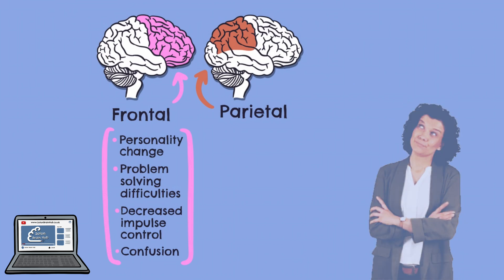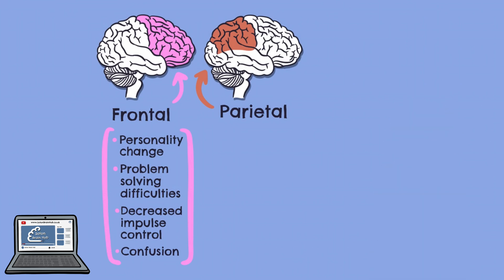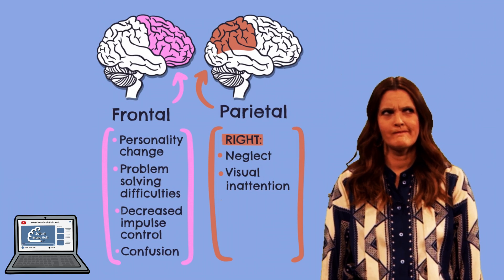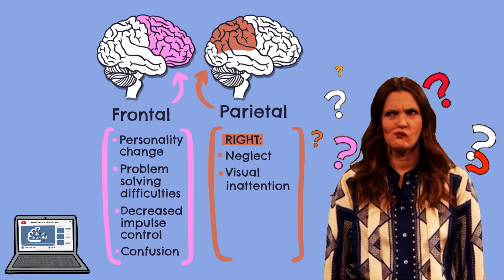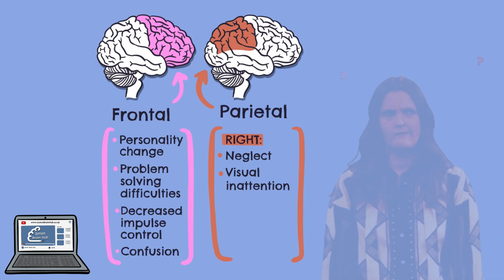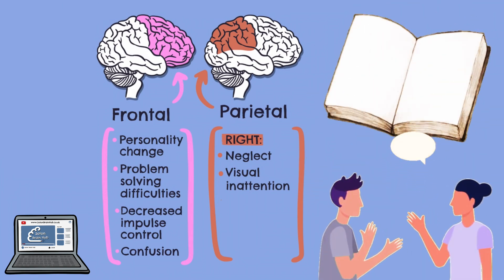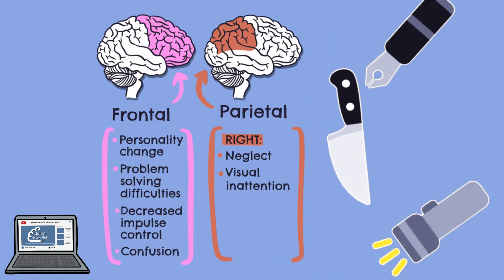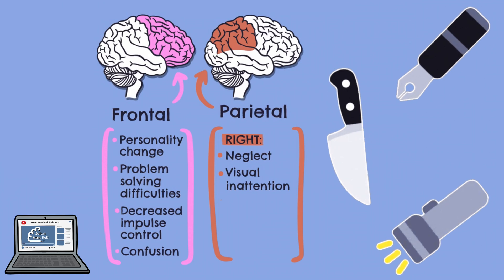Because of their role in sensory integration and language skills, damage to the parietal lobes can have a broad range of consequences. For instance, damage to the right parietal lobe can cause visuospatial deficits such as neglect and visual inattention. The patient may also have difficulty finding their way around familiar places. Damage to the left parietal lobe may disrupt a patient's ability to understand spoken and written language; they may find great difficulty in naming common objects.